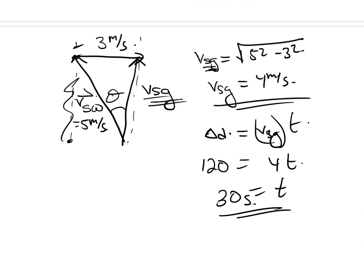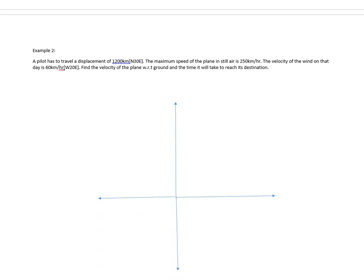I guess this is a more challenging question. It's not that hard, but a bit more challenging. So, it tells us a pilot has to travel a displacement of 1200 kilometers north 30 degrees east. The maximum speed of the plane in still air is 250 kilometers per hour. The velocity of the wind is 60 kilometers per hour west 20 degrees south. Find the velocity of the plane with respect to the ground and the time it will take to reach the destination.